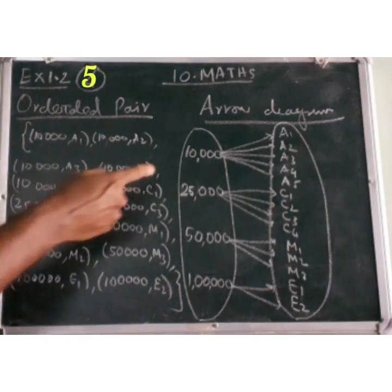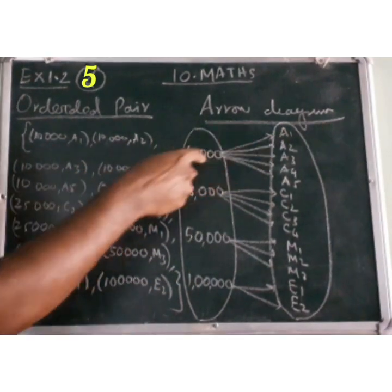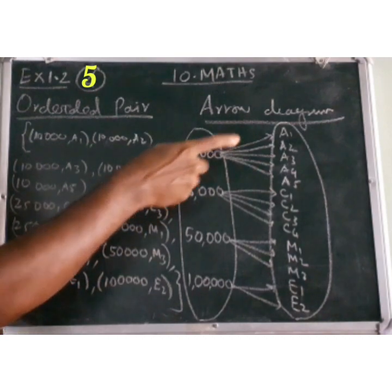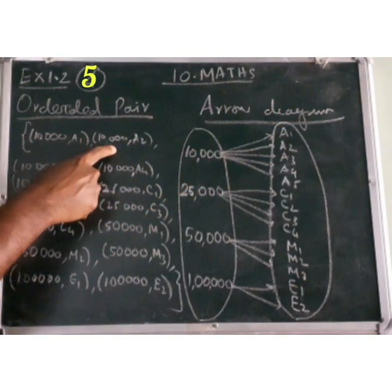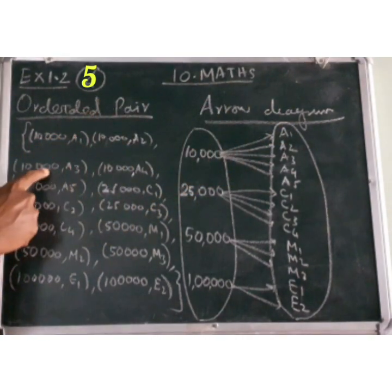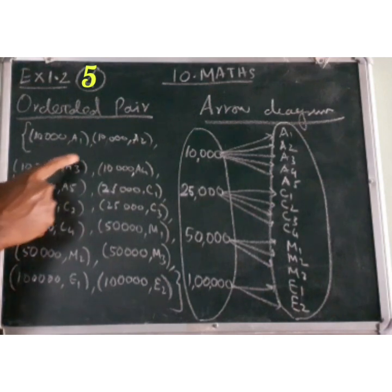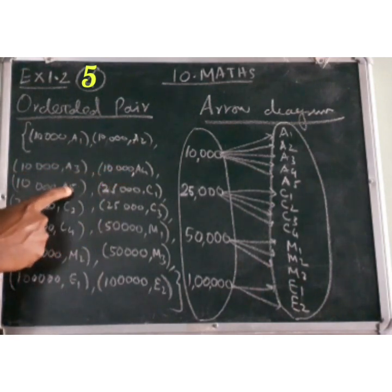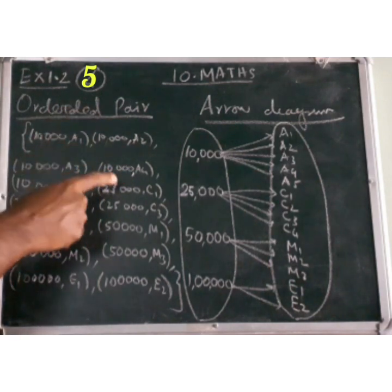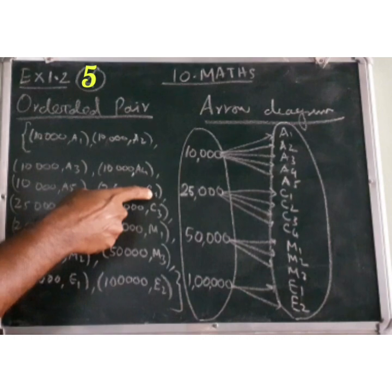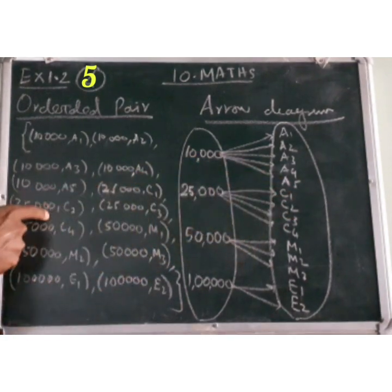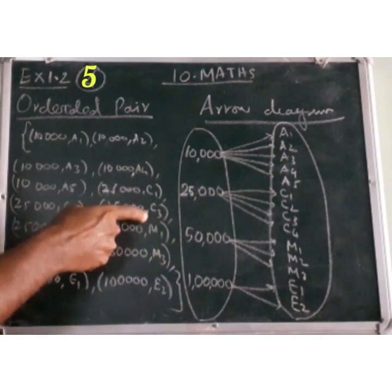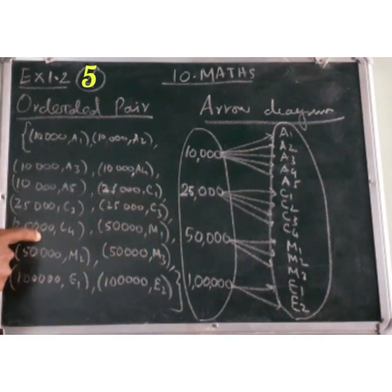The ordered pairs are: (10,000, A1), (10,000, A2), (10,000, A3), (10,000, A4), (10,000, A5). Then: (25,000, C1), (25,000, C2), (25,000, C3), (25,000, C4).